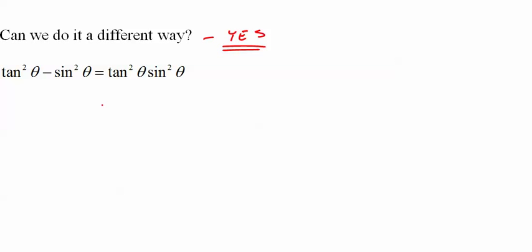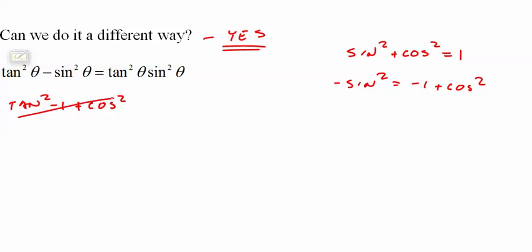What about sine squared plus cosine squared equals one? And then negative sine squared would equal negative one plus cosine squared. No, I don't think that's going to take me anywhere either. So here is just a good example. You're going to have to play with this. You're going to need a separate sheet of paper. You're going to have to make sure you try lots of different combinations. I like my sine and cosine personally, but you never know where it's going to take you.